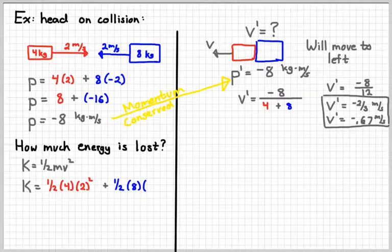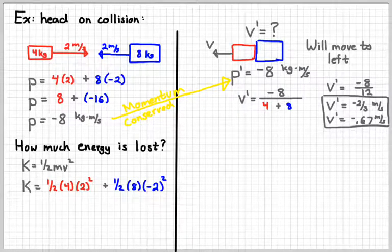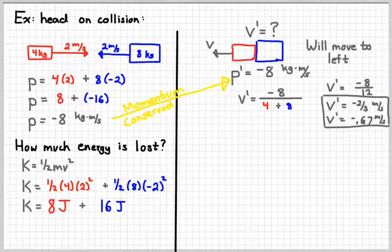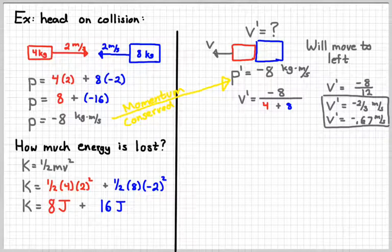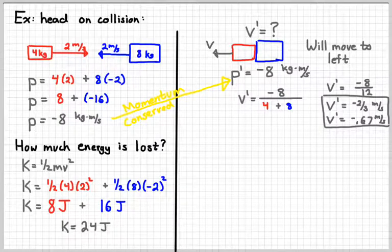So plugging in the one-half mv squared for both objects, I would get eight joules of energy for the red one, 16 for the blue one, for a total of 24 joules.